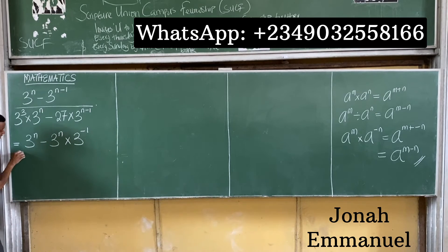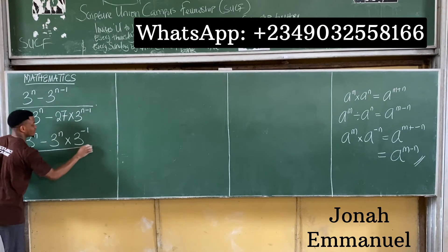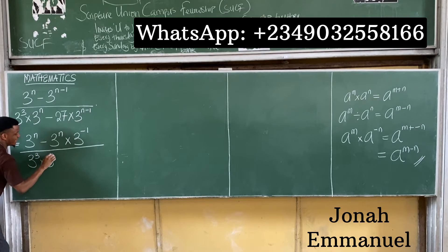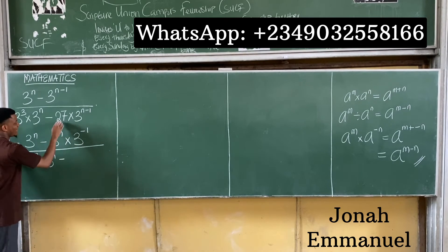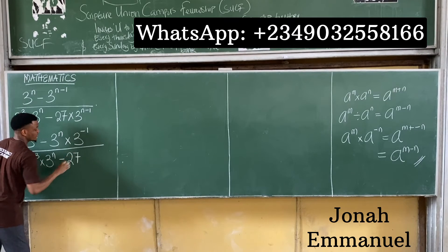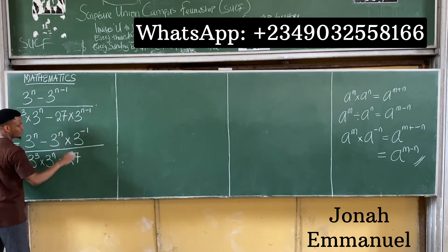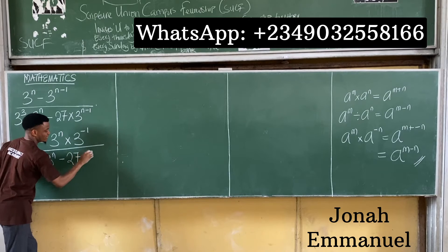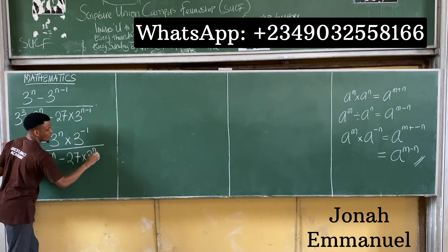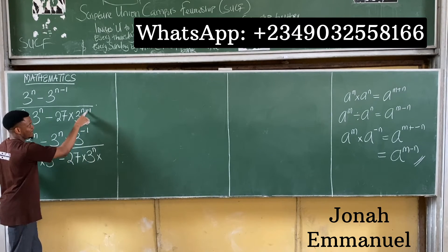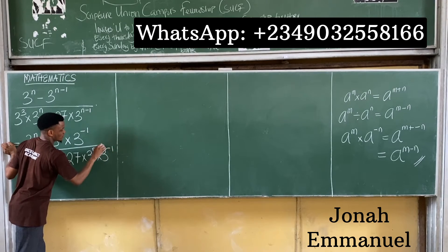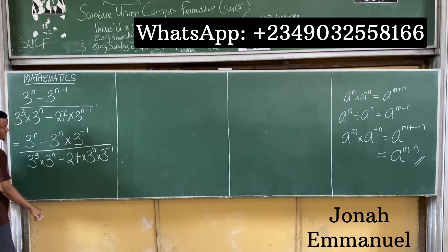In the denominator, 3 to the power 3 times 3 to the power n remains, and 27 times 3 to the power n minus 1 also becomes 27 times 3 to the power n multiplying 3 to the power minus 1.